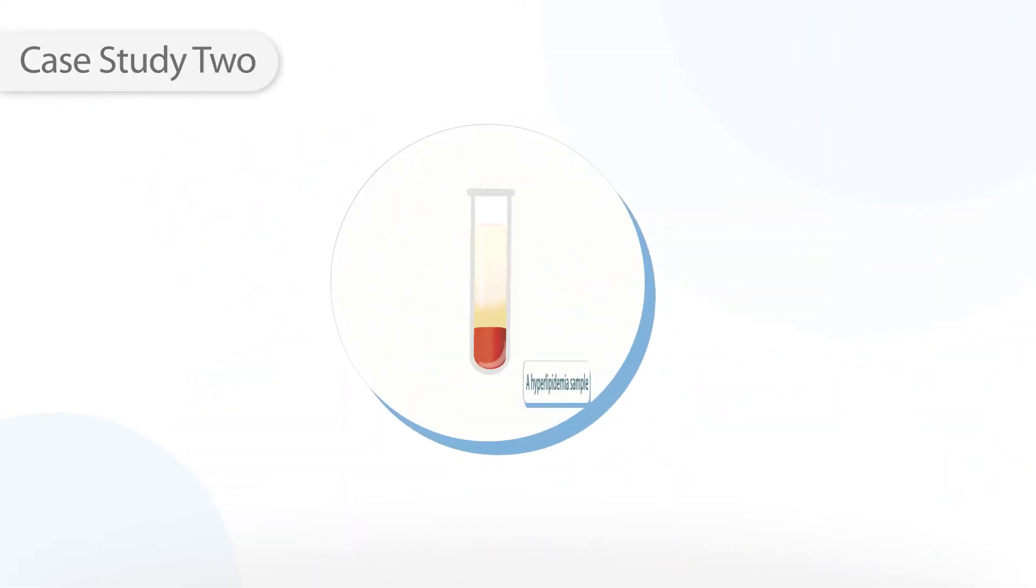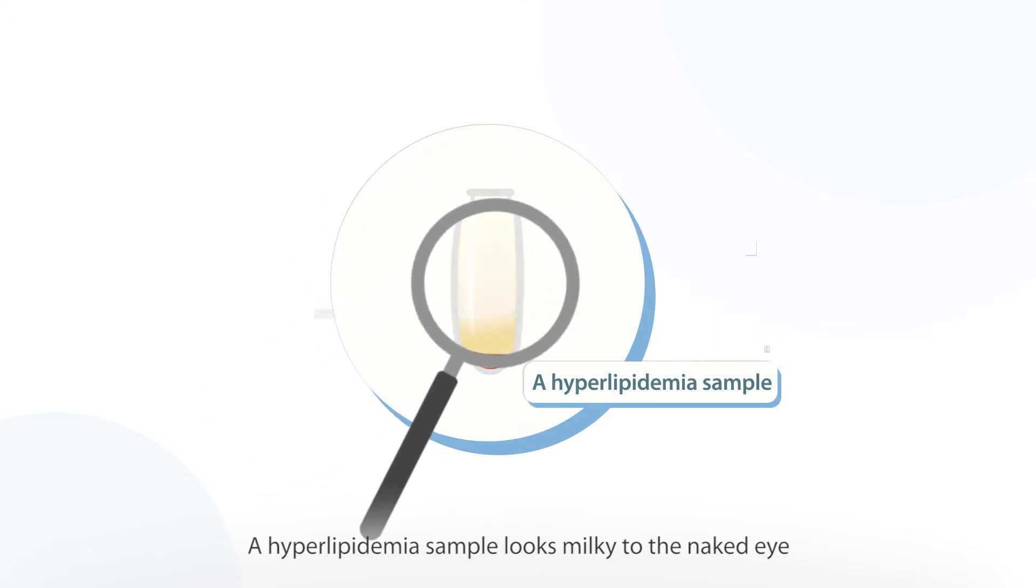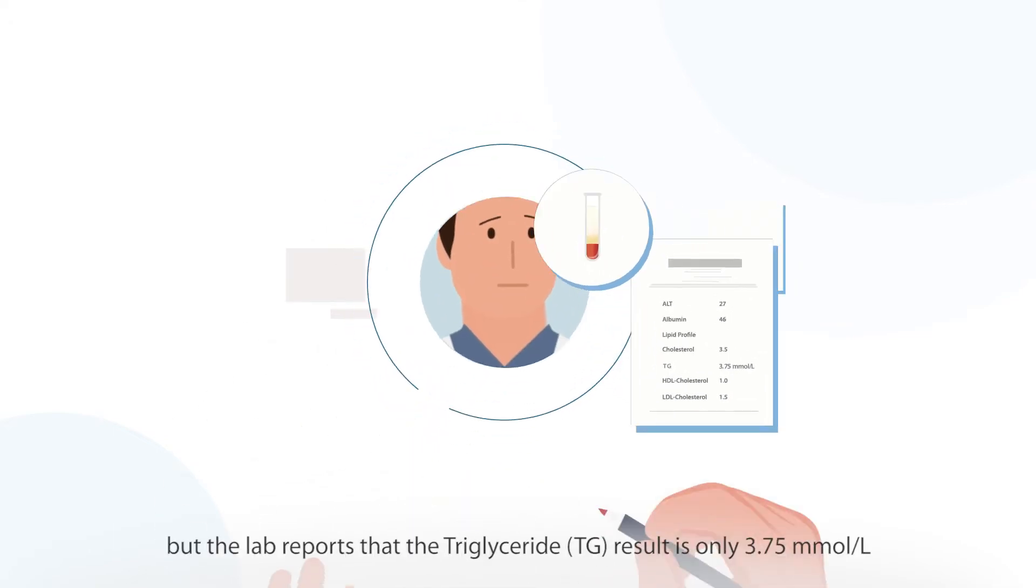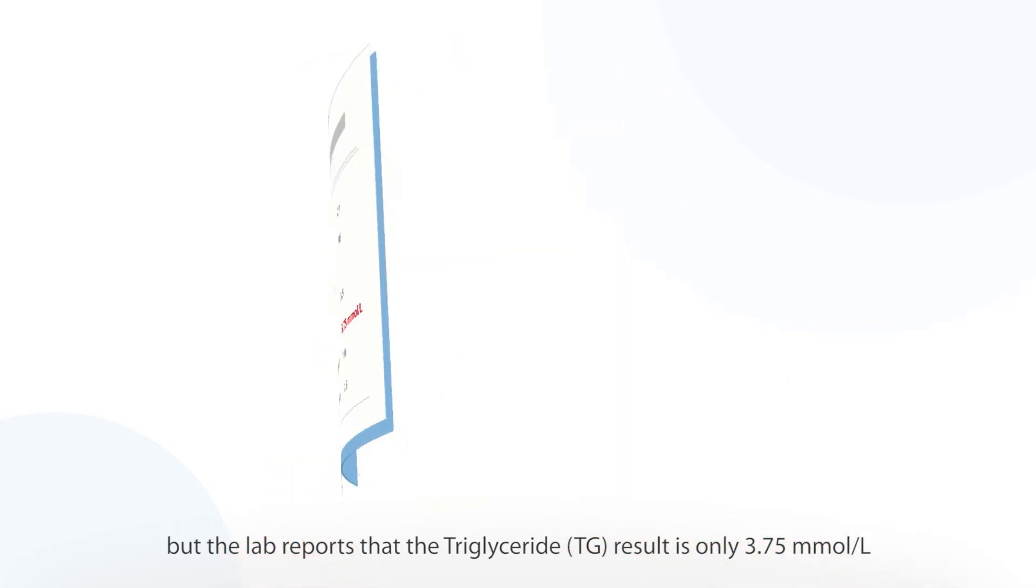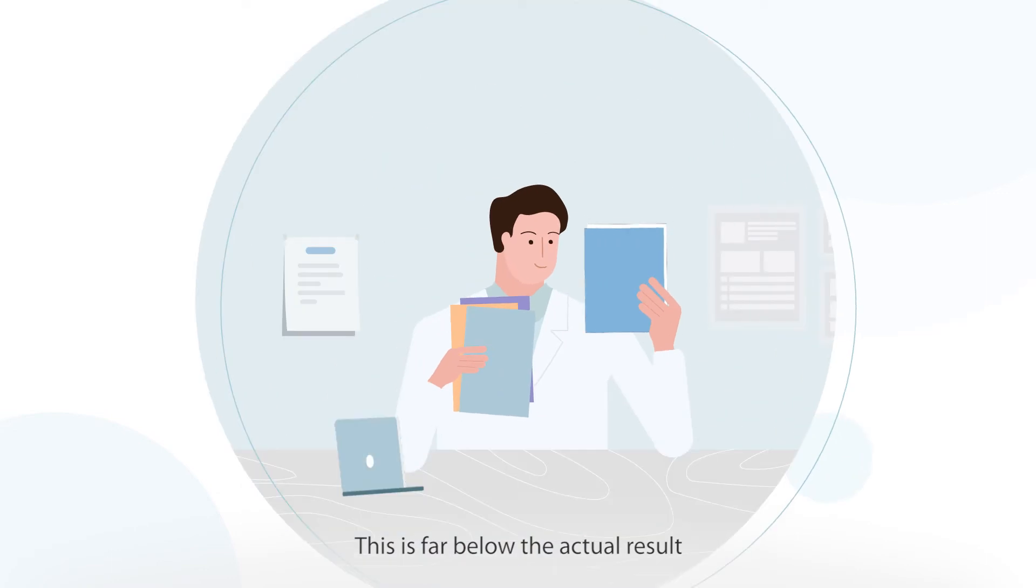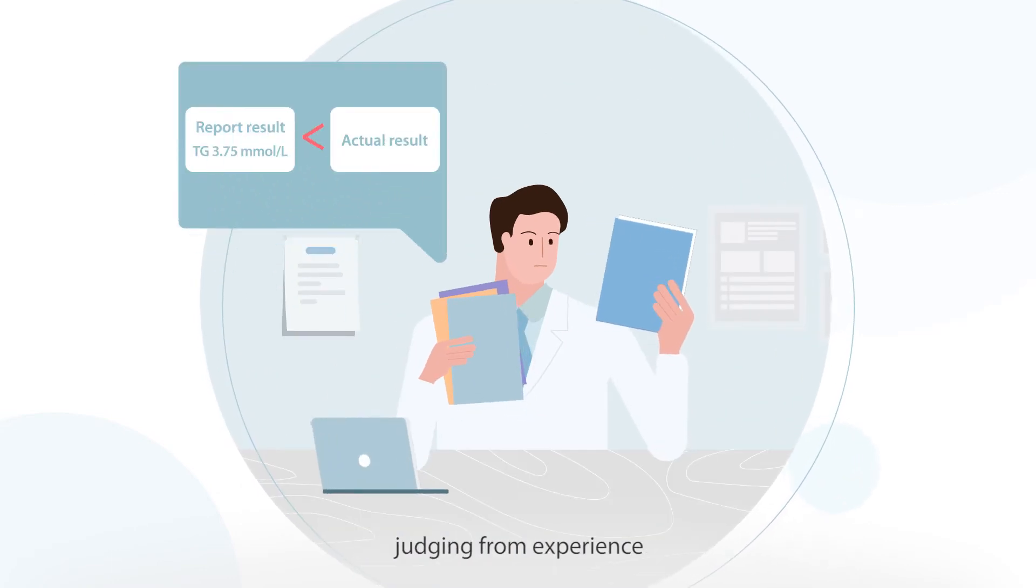Case Study 2: A hyperlipidemia sample looks milky to the naked eye, but the lab reports that the triglyceride result is only 3.75 millimole per liter. This is far below the actual result, judging from experience.